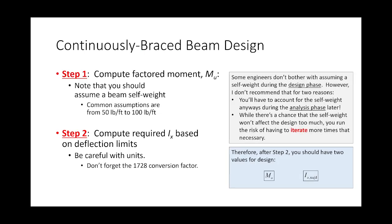Let's talk about the process. Step one: you need to compute your factored moment. Right off the bat there's a problem. With beams, we need to compute the factored moment including the beam's own self-weight — but we don't know the self-weight because we haven't picked the beam yet. In design mode, you don't know what the beam looks like, so you have to assume a self-weight.